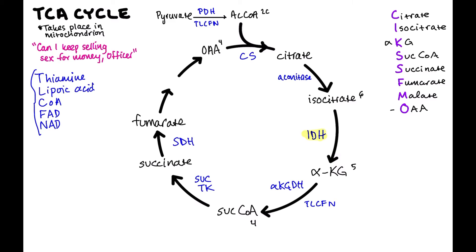Next, we go from fumarate to malate. The enzyme that does this is called fumarase. And then finally, we go from malate to oxaloacetate, and the enzyme that does this is called malate dehydrogenase. So we now know all of our intermediates and enzymes. If you know what intermediate you're going to, you should be able to remember the enzyme, because the enzyme names correspond to their products.